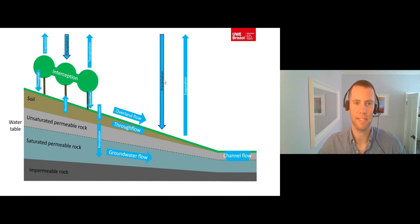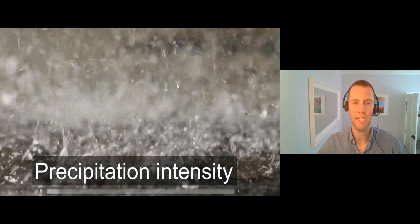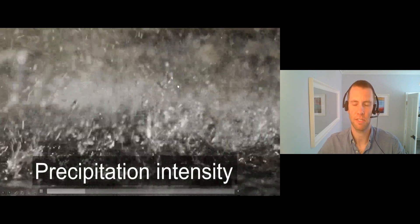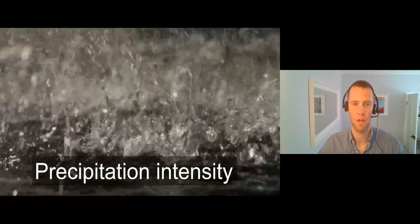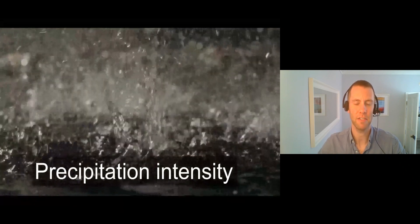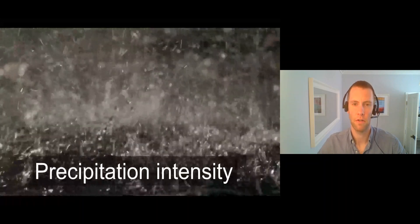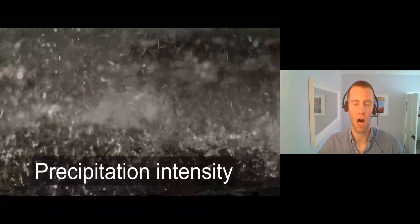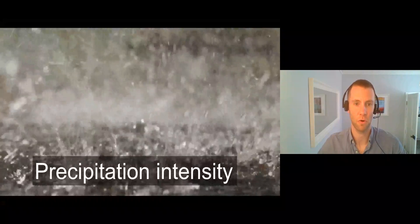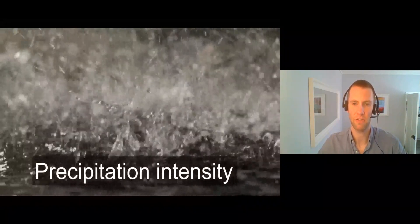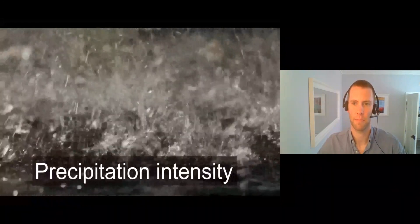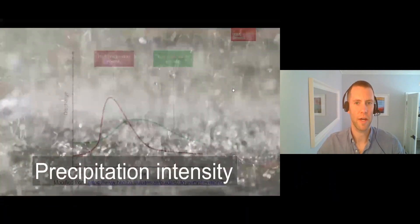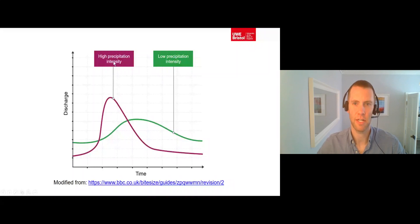Starting with precipitation. Precipitation intensity is the amount of precipitation falling over a given time period, usually measured in millimetres of depth per hour. Drainage basins with lots of high intensity precipitation, like heavy storms, have lots of water entering the drainage basin over a short period of time. This will cause drainage basins with higher precipitation intensity to have higher levels of storm flow entering the channel, resulting in a flashier hydrograph.